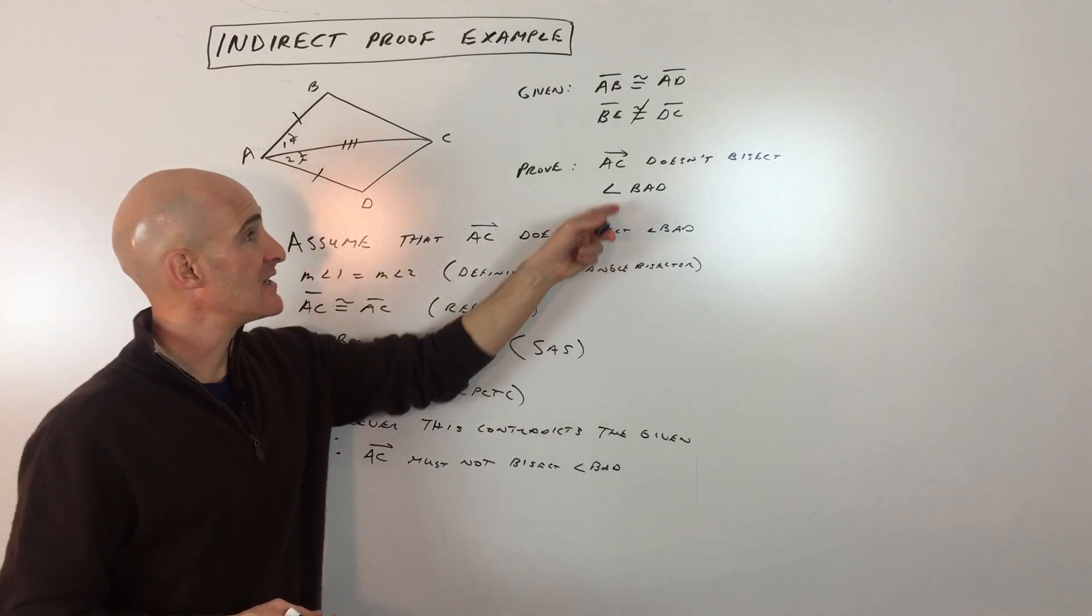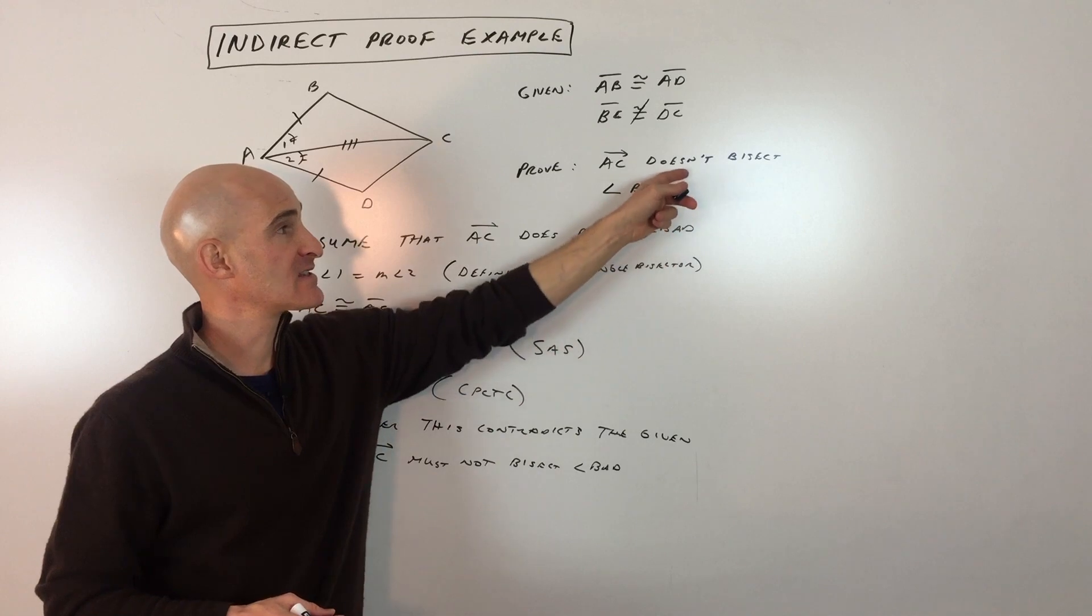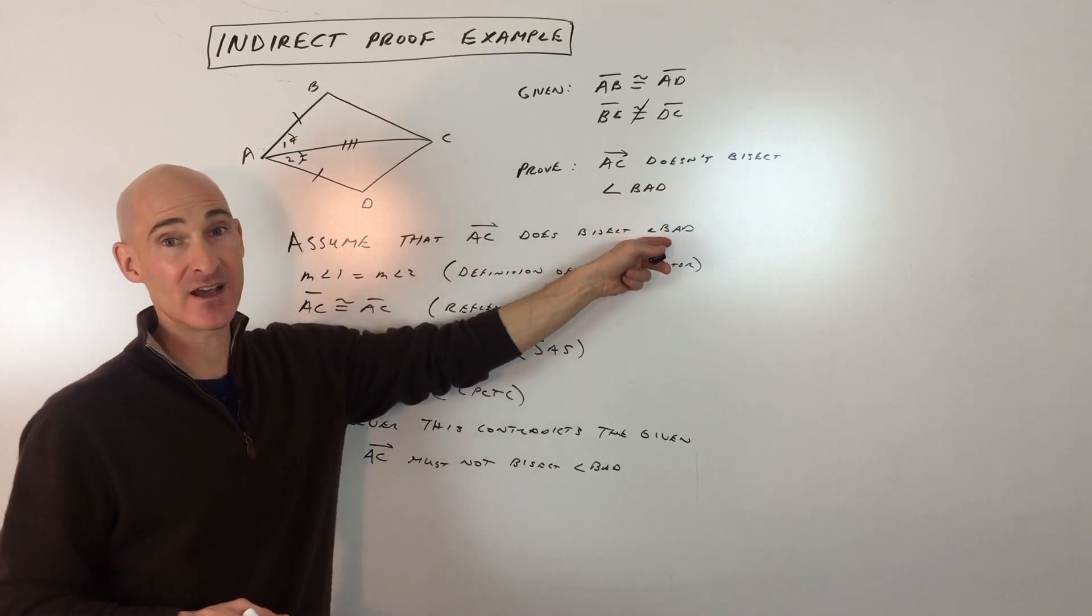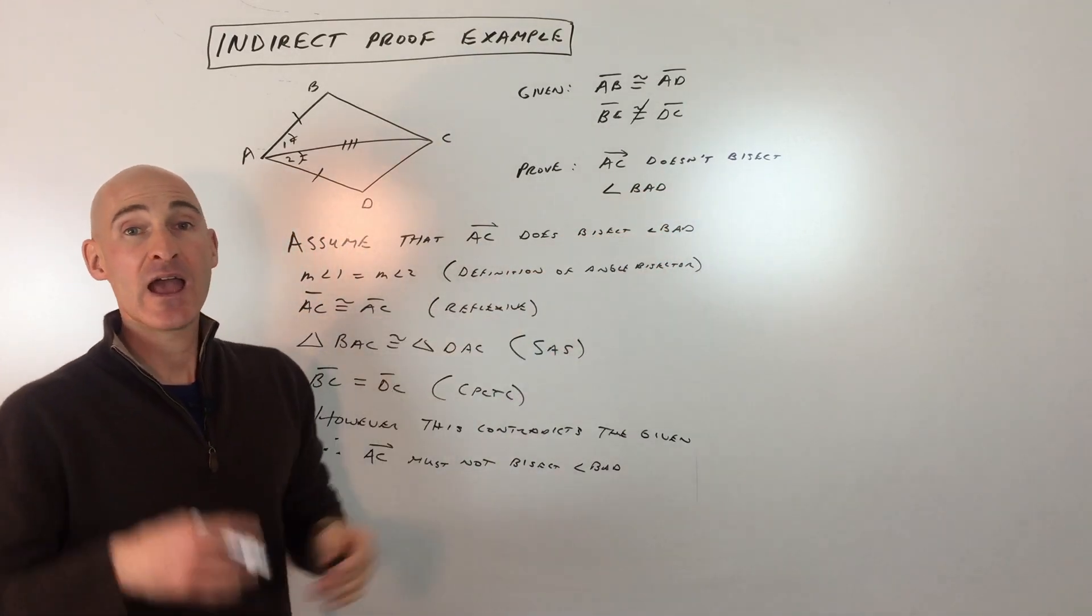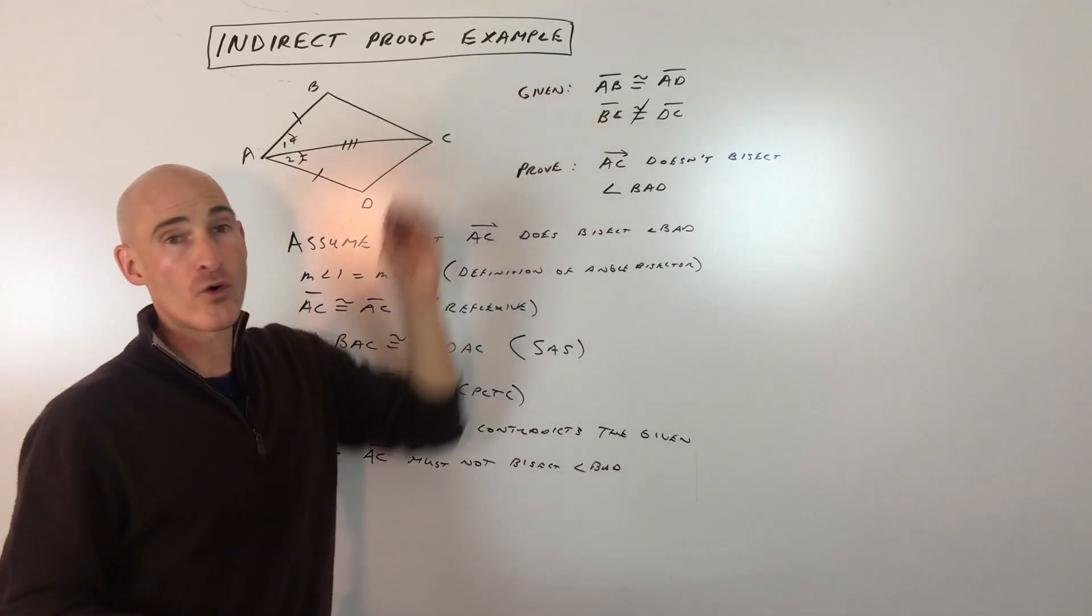We reason based on that temporary assumption. In this case, we're assuming that AC does bisect angle BAD. The problem says it does not, but we assume the opposite. You reason from there until you get a contradiction of the given or a known fact.